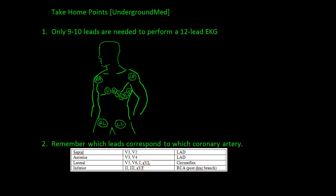The other main thing to get out of this video is which leads correspond to which coronary arteries. Remember, V1 through V4 correspond to the LAD. V5, V6, lead 1, and AVL correspond to the circumflex. And leads 2, 3, and AVF correspond to the RCA.